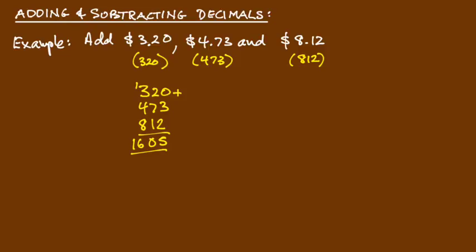And I would get, if I went 0 plus 3 plus 2 gives me 5. 2 plus 7 plus 1 gives me 10, so 0 carry the 1. 3 plus 1 is 4, plus 4 is 8, and 8 is 16. I'd get 1605.